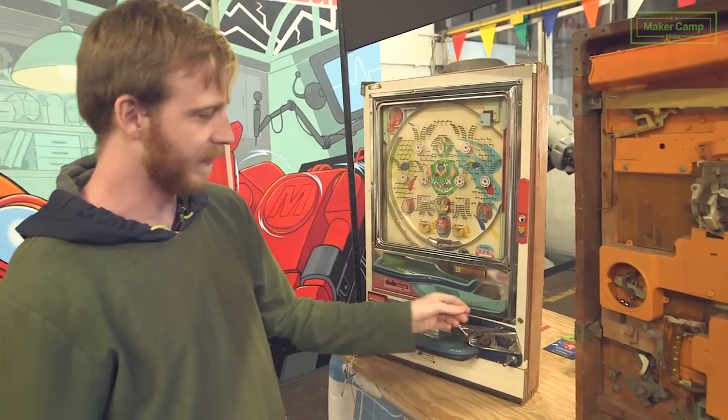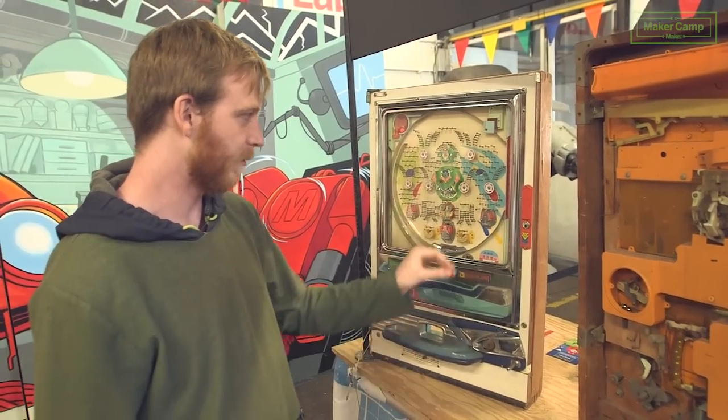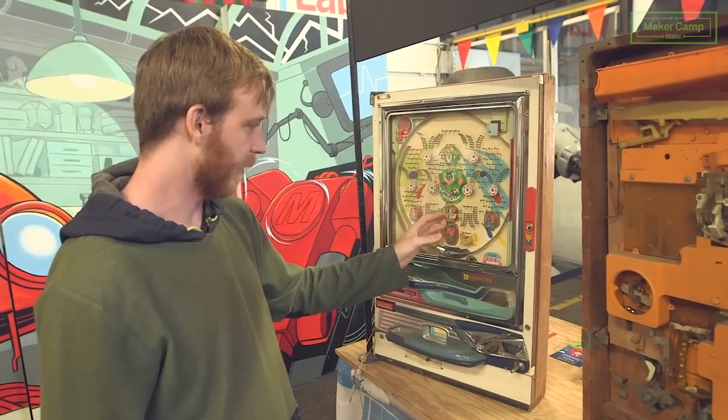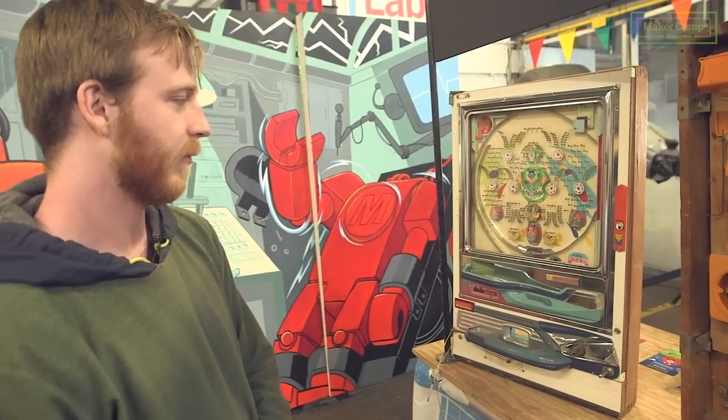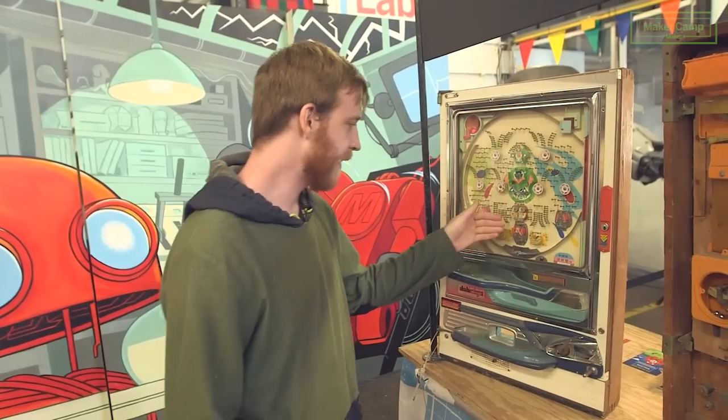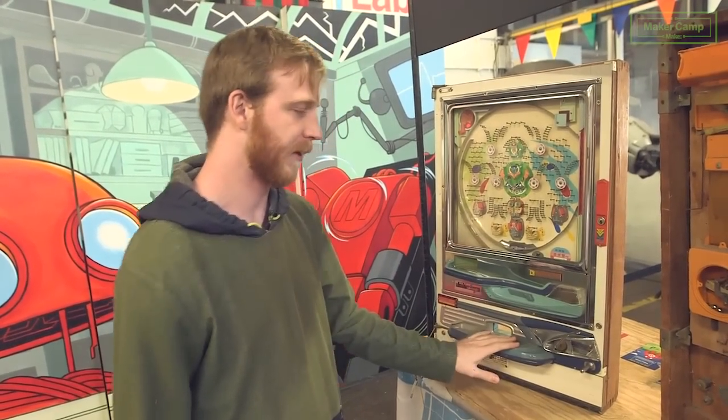And the objective is to flip the switch at just the right velocity where the ball will fall into one of these jackpot holes or one of these lotus flowers. And depending on which one you get it in, it can tell how many balls to pay out down here in the jackpot center.